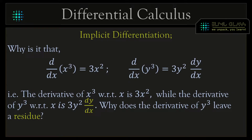We want to understand this in order to solve questions relating to implicit differentiation. Sometimes when we understand where things come from, it becomes easier to remember them over a long period of time. Let's go back and see where this comes from — I mentioned this in lesson 5.12.